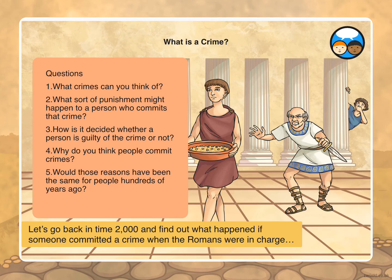I want you to start off by having a think about the question: what is a crime? You can either think about these yourself or go and have a chat with a member of your family or a friend. Some questions for you: What crimes can you think of? What sort of punishment might happen to a person who commits those crimes? How is it decided whether a person is guilty of the crime or not? Why do you think people commit crimes, and would those reasons have been the same for people hundreds of years ago? Pause the video and have a think or chat about those questions first.